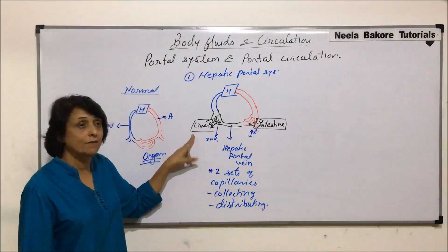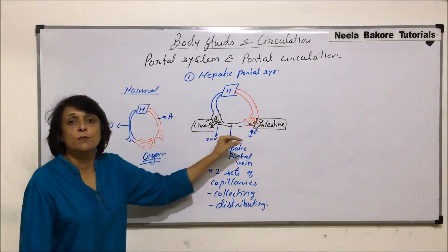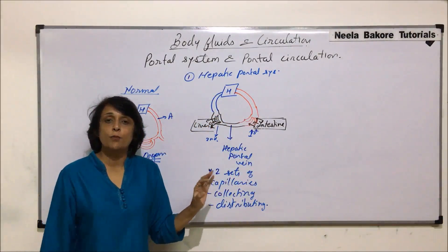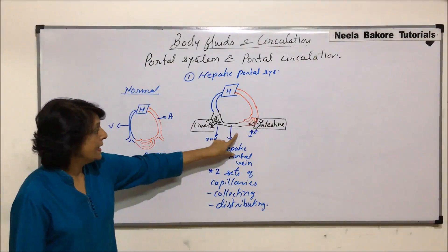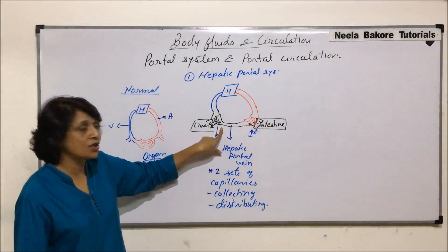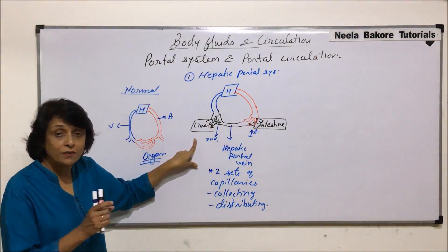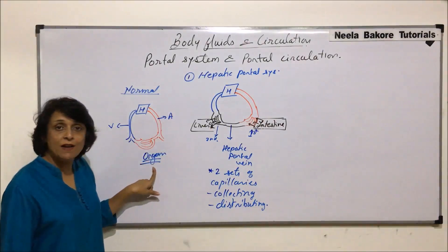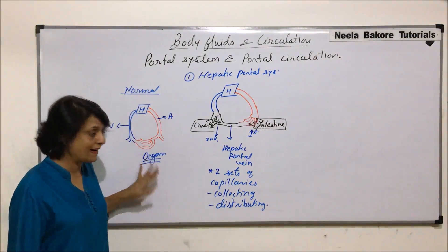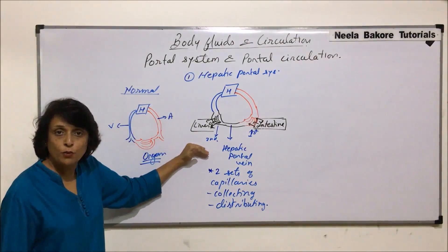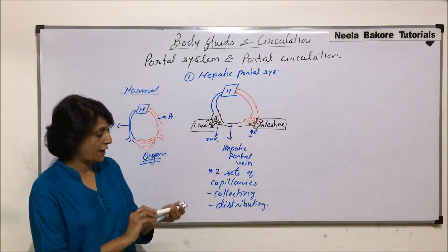Here the organ is the liver, and that is why we call it the hepatic portal vein. This is the hepatic portal circulation. The difference from normal circulation is there is an additional set of capillaries and an additional intermediate organ. In normal circulation, there is only one set of capillaries and the blood goes directly back to the heart.